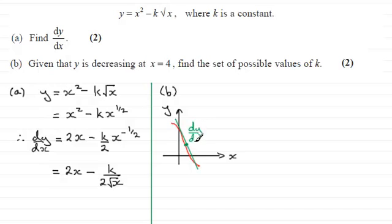So dy by dx, which gives the gradient, would be a negative number, it would be less than 0. So it's that idea that we use here. And we can see that when x equals 4, then we know that dy by dx must be less than 0.